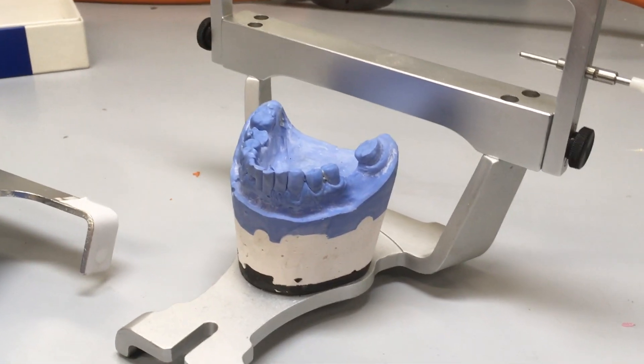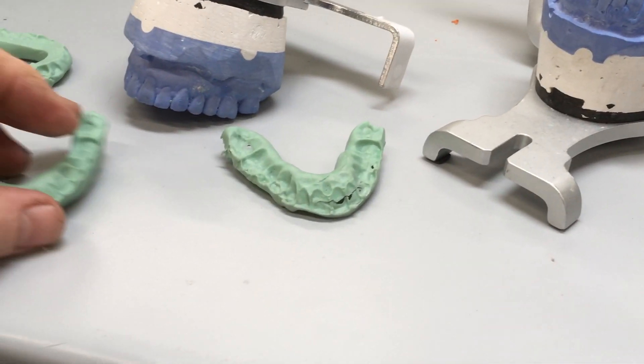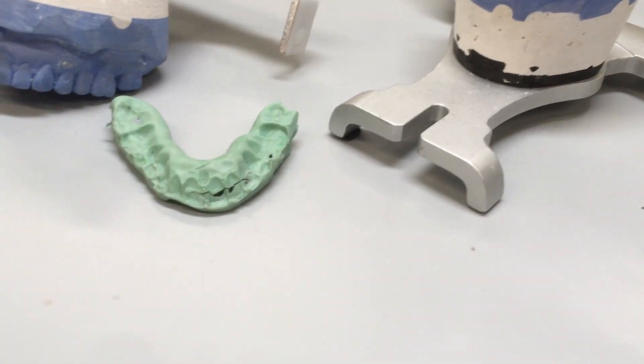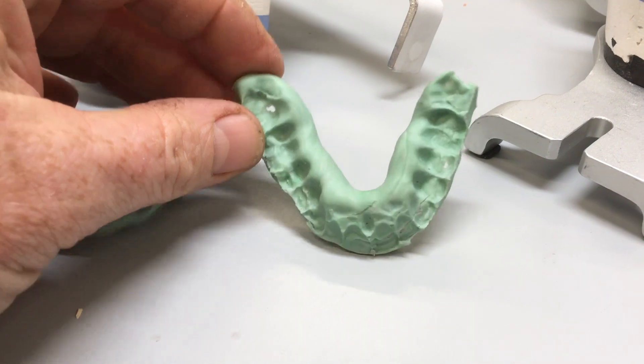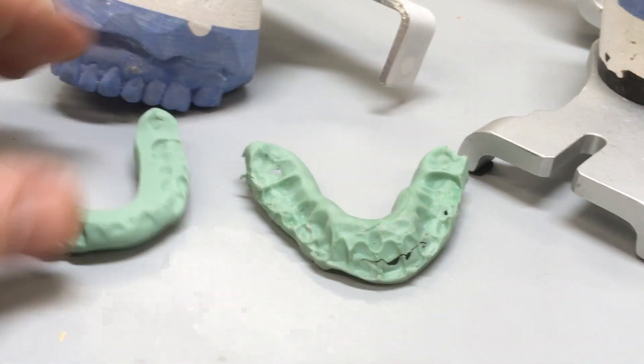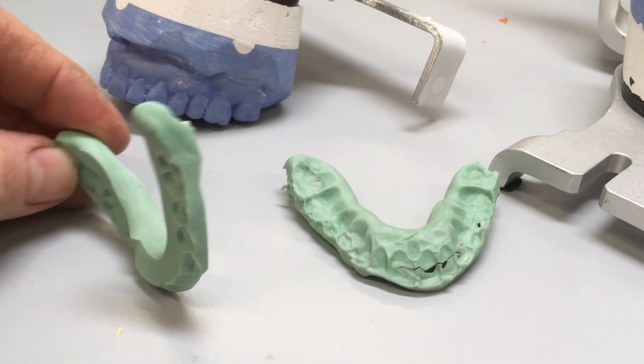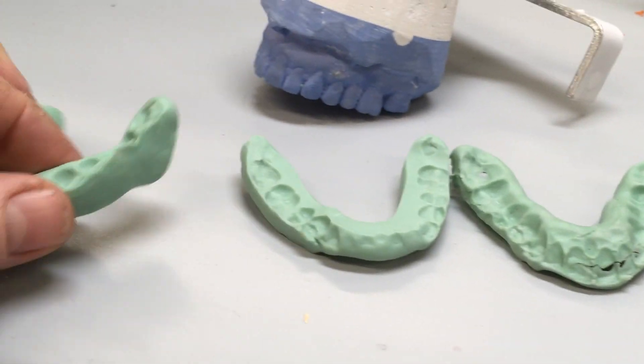That allows us to see if each of these three records, for example, are recording the same position of the condyle. You'll see each one is recorded at a different vertical dimension.